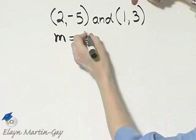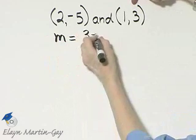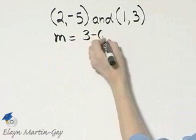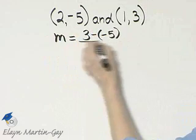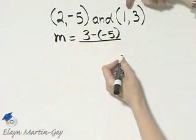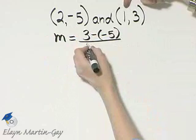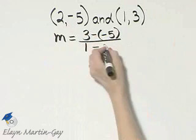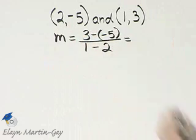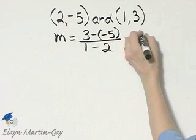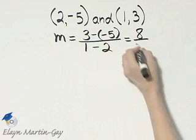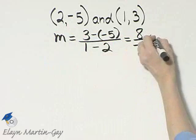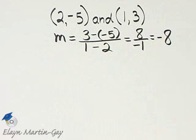That would be y, be careful, minus this y over, now I started with this y, so I must start with this x in the denominator, x minus x. 3 minus a negative 5, that's 3 plus 5, or 8, over negative 1, so I have a slope of negative 8.